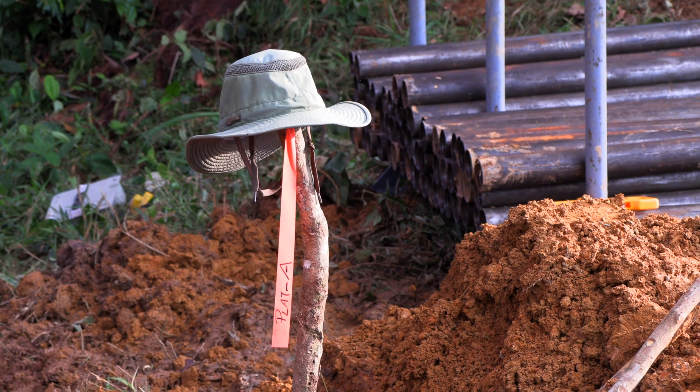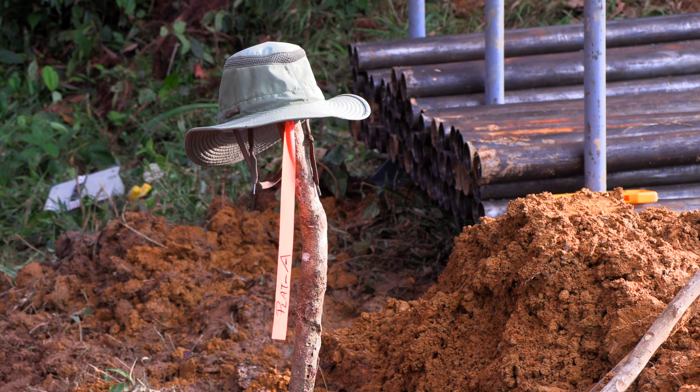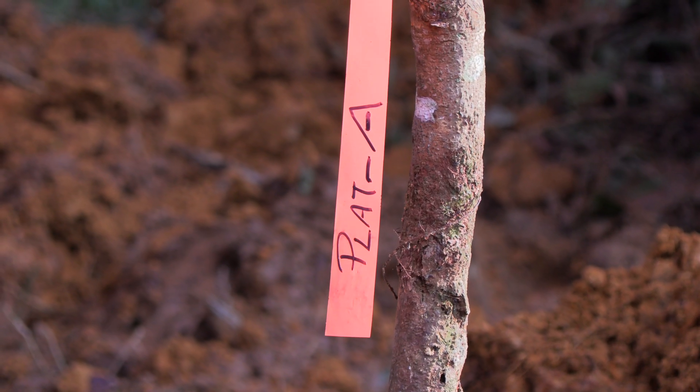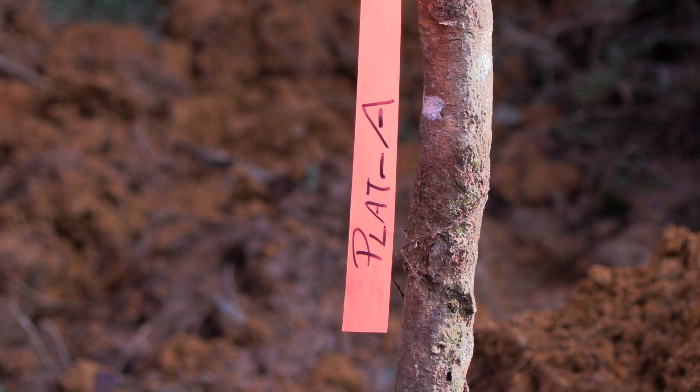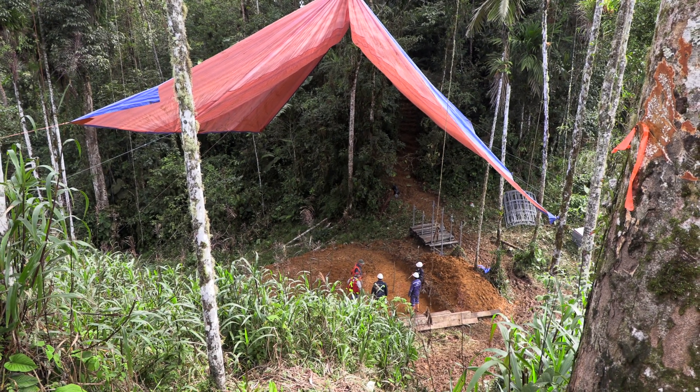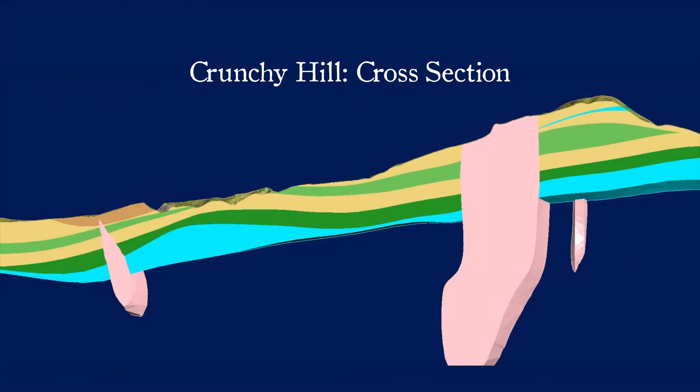So we've got to take our best guess at what's under Crunchy Hill, and the way we've done that is by mapping the geological characteristics of the sides of Crunchy Hill and the area around about, and then taking those geological characteristics through underneath Crunchy Hill so we end up with these vertical geological slices, or cross-sections.